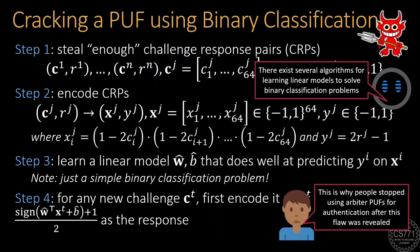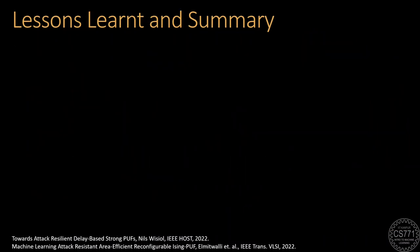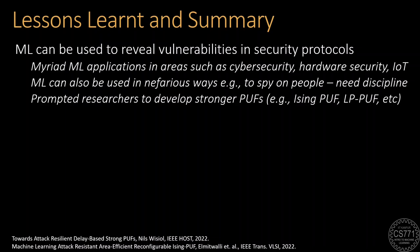Once this revelation was made to the hardware security community, people stopped using arbiter PUFs for authentication and put a lot of effort into designing better PUFs that cannot be broken so easily. The case study we just saw teaches us several important lessons about how machine learning is used in the real world. We saw how machine learning was used to alert the cyber security community about the vulnerability of the arbiter PUF, and it prompted researchers to invest time and effort into developing stronger PUFs that do not crack under machine learning attacks so easily. The Ising PUF and the LP PUF are among recent examples of such PUFs. Machine learning has similarly been used to make advances in several other fields such as medicine, healthcare, and governance.